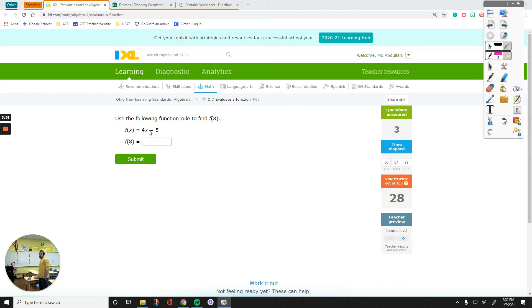This one is the same. You are going to plug in 8. The answer is going to be 27. All you have to do is take this 8, plug it in. 4 times 8 is 32. Minus 5 is going to be 27.